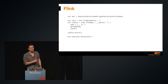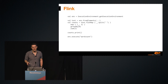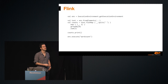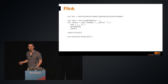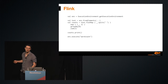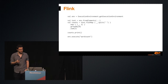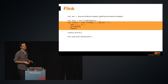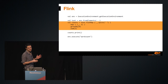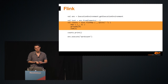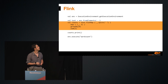Now let's take a look at Flink. The API is pretty similar to Spark Streaming, but notice we are not setting any batch interval. The computation itself is pretty straightforward — just a couple of functional calls — and Flink takes care of the rest.